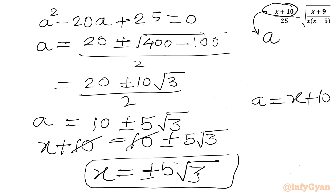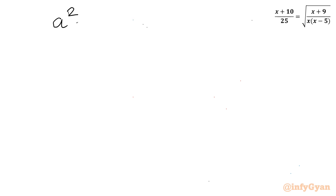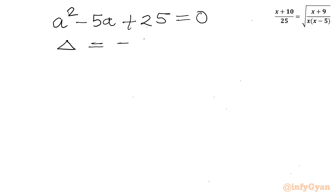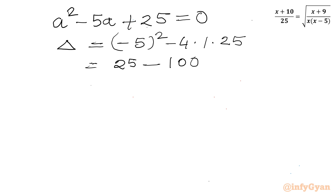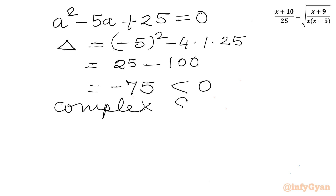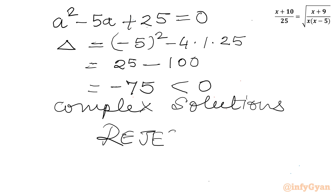Now I will consider the second quadratic equation: a² minus 5a + 25 = 0. Let us check the discriminant: b² minus 4ac = 5² minus 4(1)(25) = 25 minus 100, which is negative. Since the discriminant is negative, we will get complex solutions from here, so we reject this case.